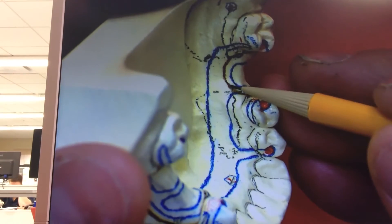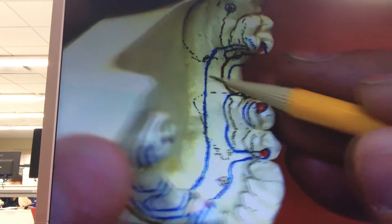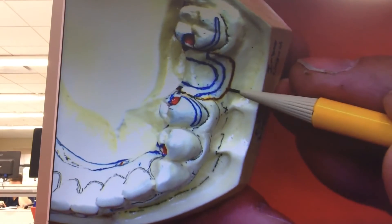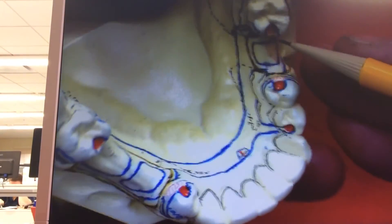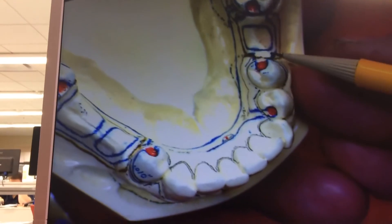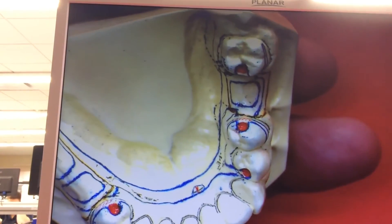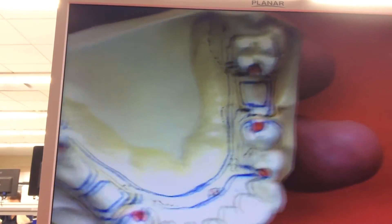Same thing here, the acrylic does not cross the major connector. Open lattice work, acrylic out here on the buccal. I wouldn't do a tube tooth there because I like my tube teeth in very small restricted spots where I'm not going to actually have enough bulk of acrylic for strength.